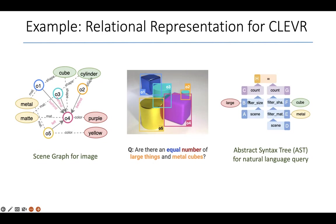Or I might want to only filter objects that have the attribute large, which would, in this case, presumably be O4 and O5. And then finally, I might want to equate the counts of two sets of objects that I'm seeing here, which is what this query is asking for, whether there are an equal number of large things and metal cubes.